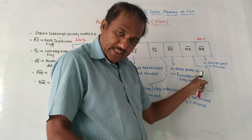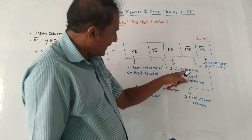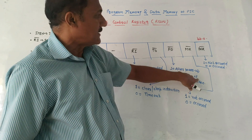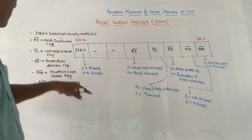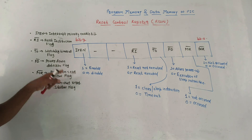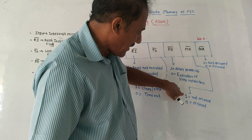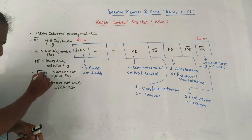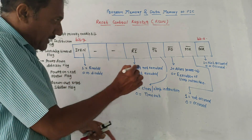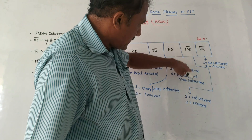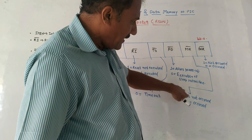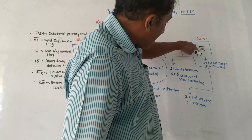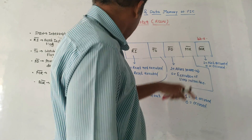After power-up, when power is switched on, this bit is one. It is zero after execution of the sleep or clear instruction. POR-bar is the Power-On Reset status flag. If this bit is one, it indicates that power-on reset has not occurred. If it is zero, it indicates that power-on reset has occurred.